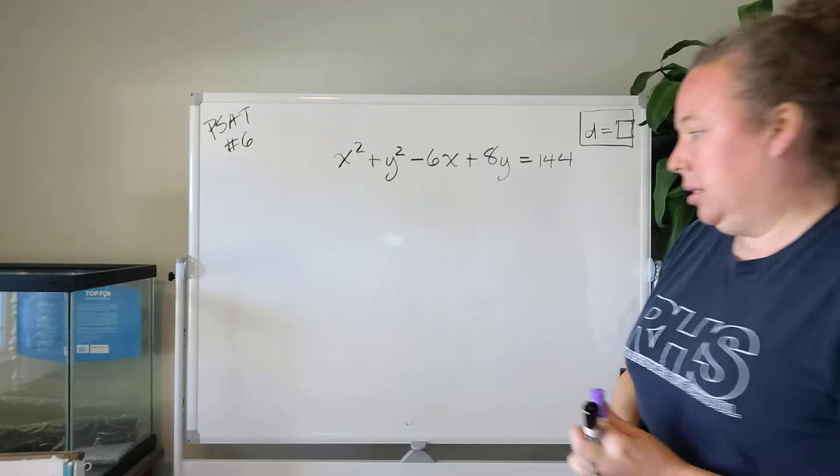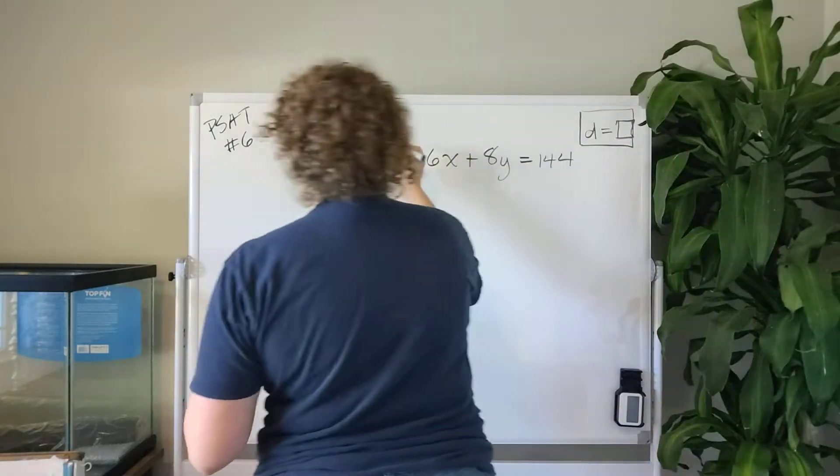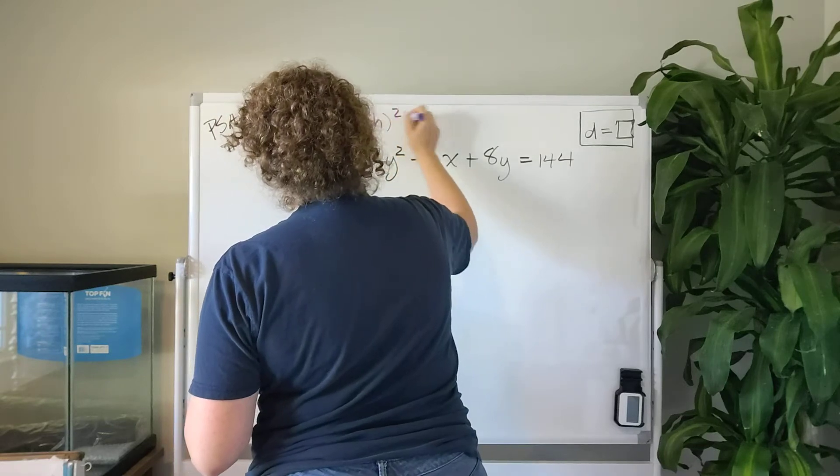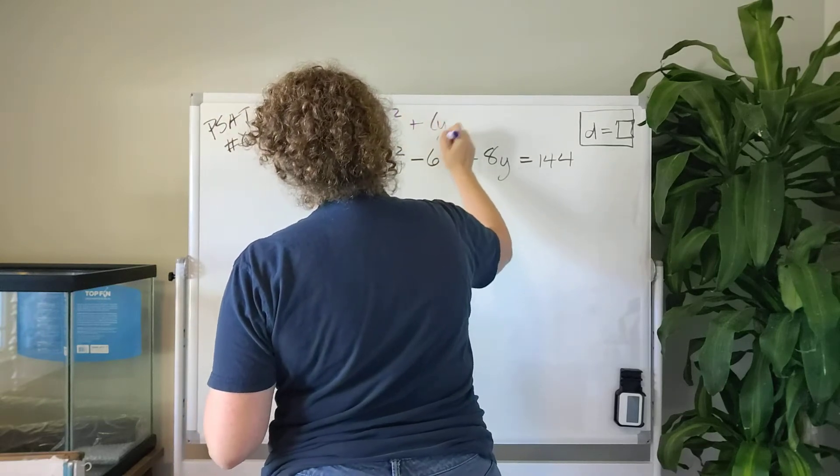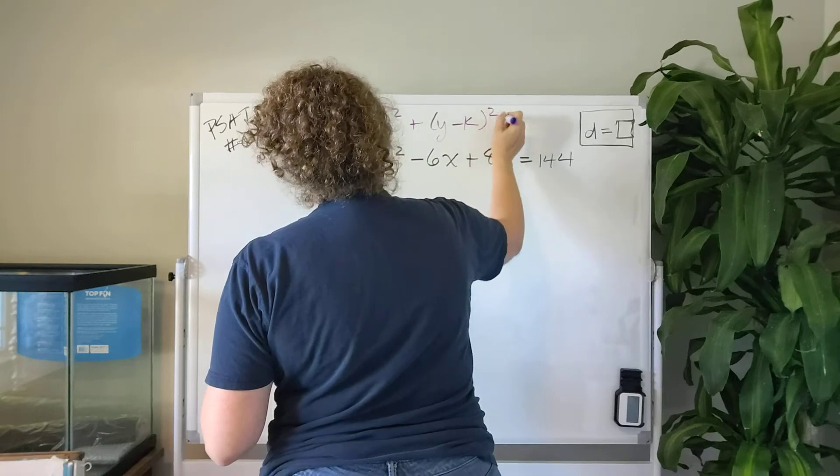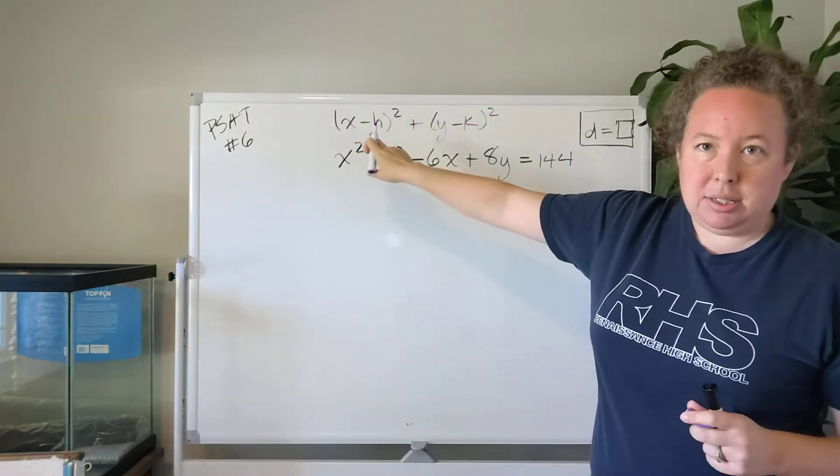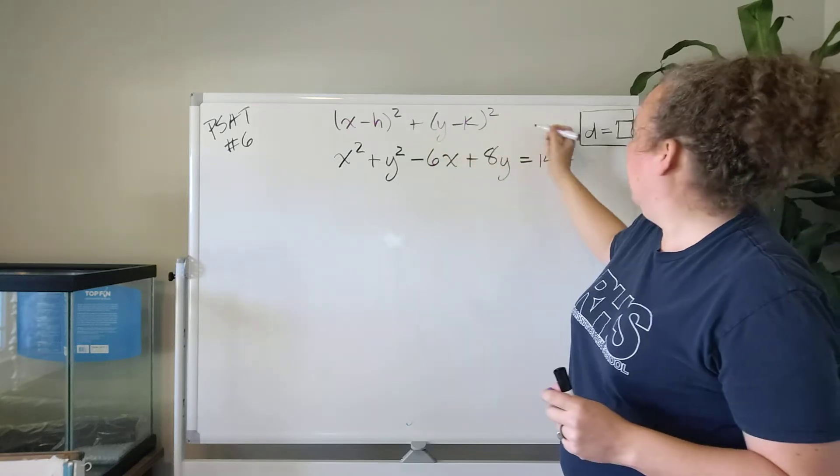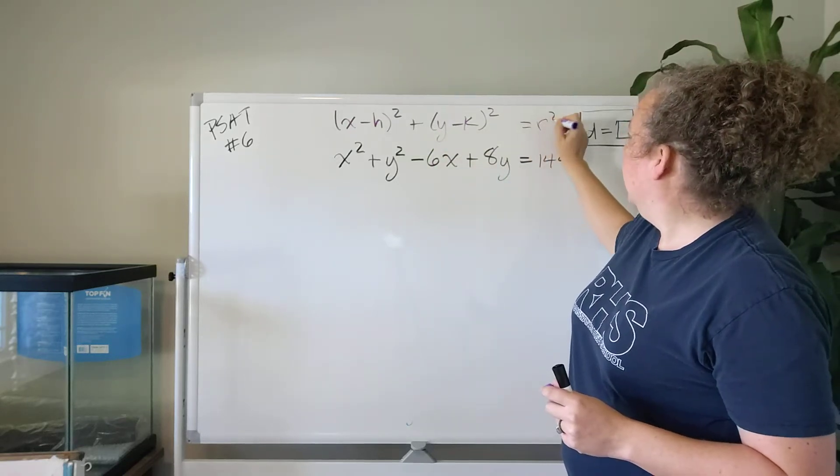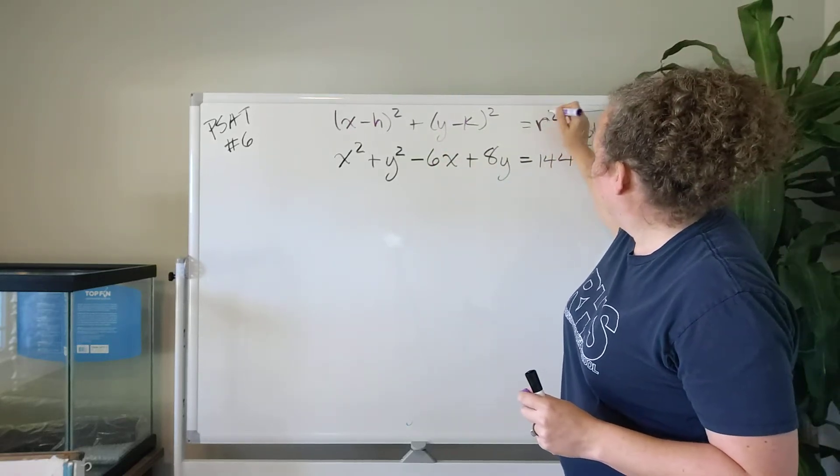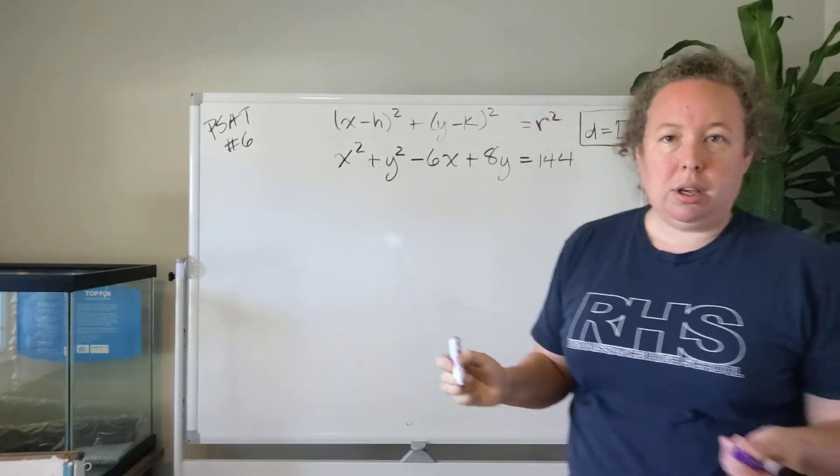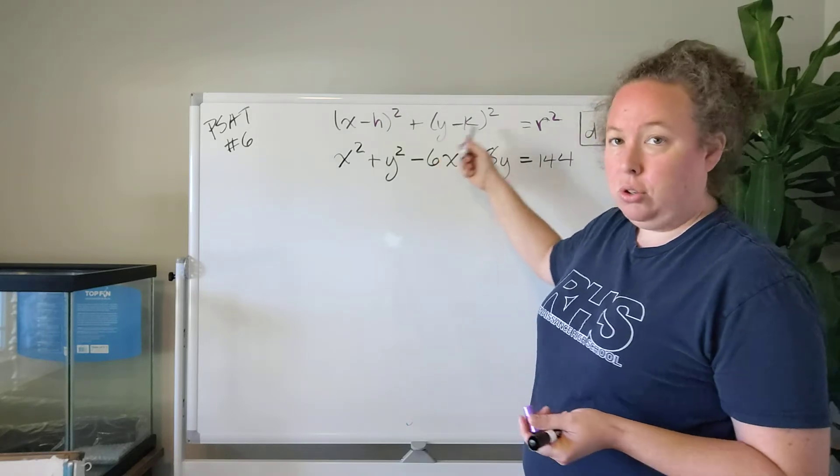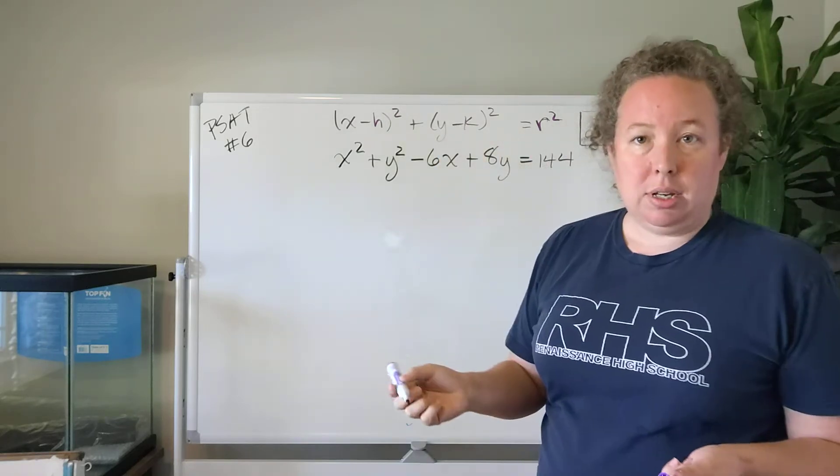One of the things that I'd like to point out right here at the top is that x minus h squared plus y minus k squared equals r squared is the generic equation of a circle where hk is the center of the circle and r is the radius.